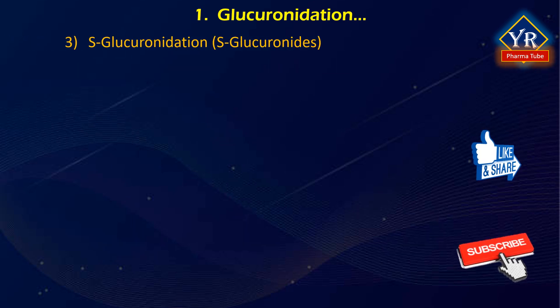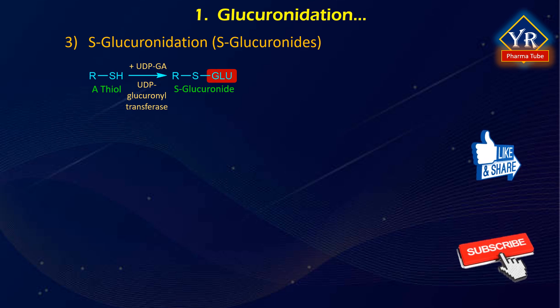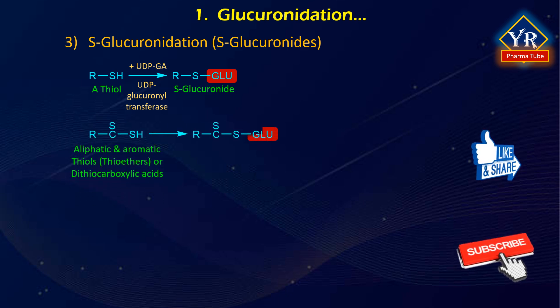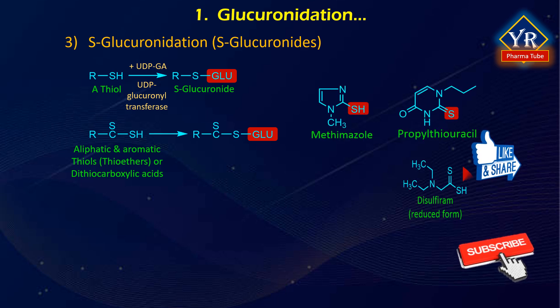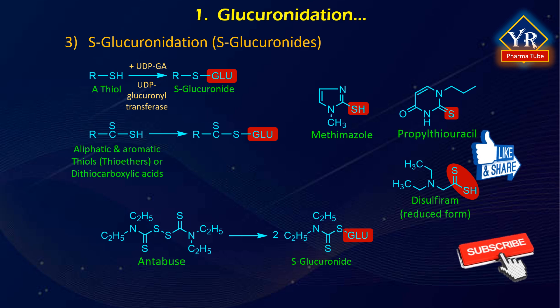S-glucuronidation: thiol groups can react with UDPGA in the presence of UDP glucuronosyltransferase to yield S-glucuronides. Because the thiol group does not commonly occur in drugs, S-glucuronide products have been reported for only a few drugs containing aliphatic and aromatic thiols, that is thiophenols, as well as dithiocarboxylic acids. For example, the thiol groups present in methimazole, propylthiouracil and N,N-diethyldithiocarbamic acid, which is a major reduced metabolite of disulfiram, undergo conjugation with glucuronic acid. An example of this is given in the figure with Antabuse as substrate.